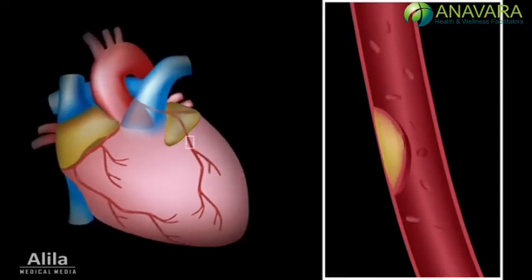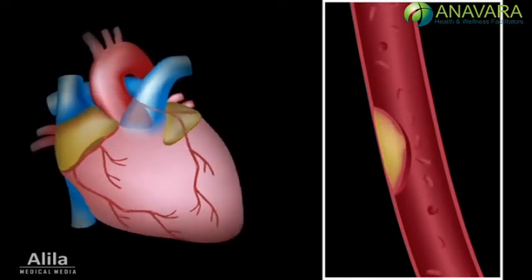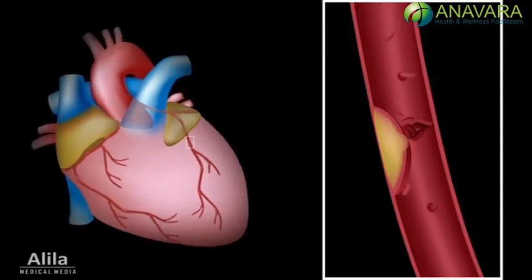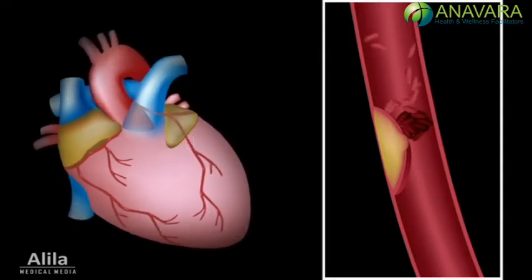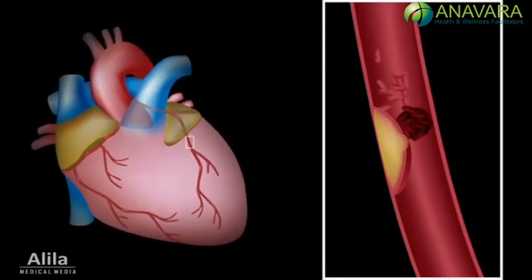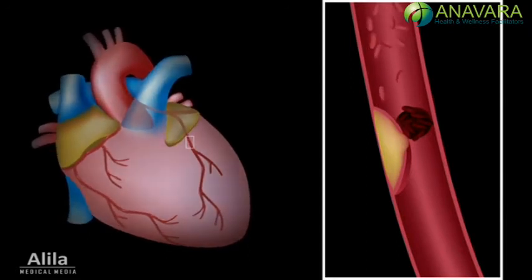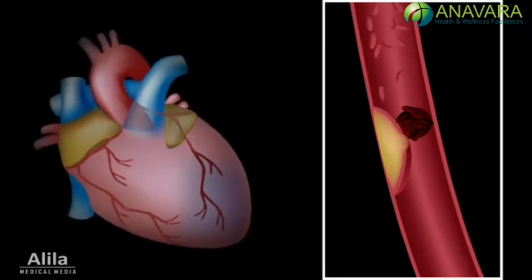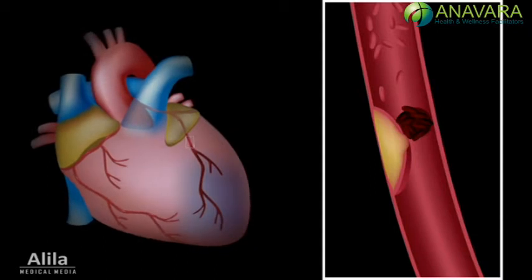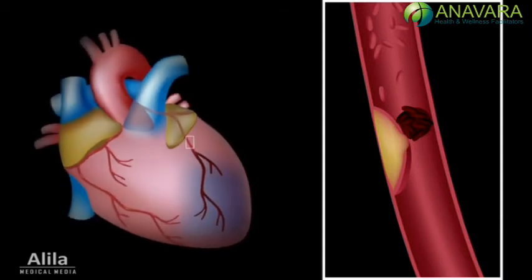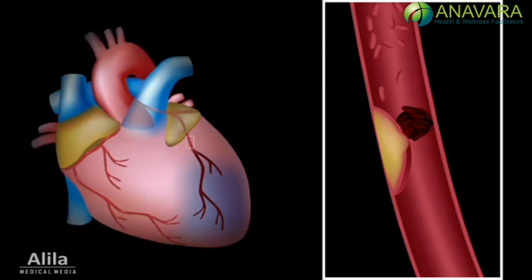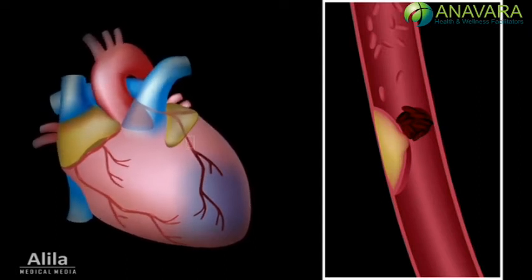Under stress, the plaque may rupture, and this may trigger formation of a blood clot on top of the plaque, leading to a complete blockage. When this happens in a coronary artery, the downstream patch of the myocardium dies from lack of oxygen. Weakened heart muscle may disrupt electrical activity of the heart and subsequently cause cardiac arrest.